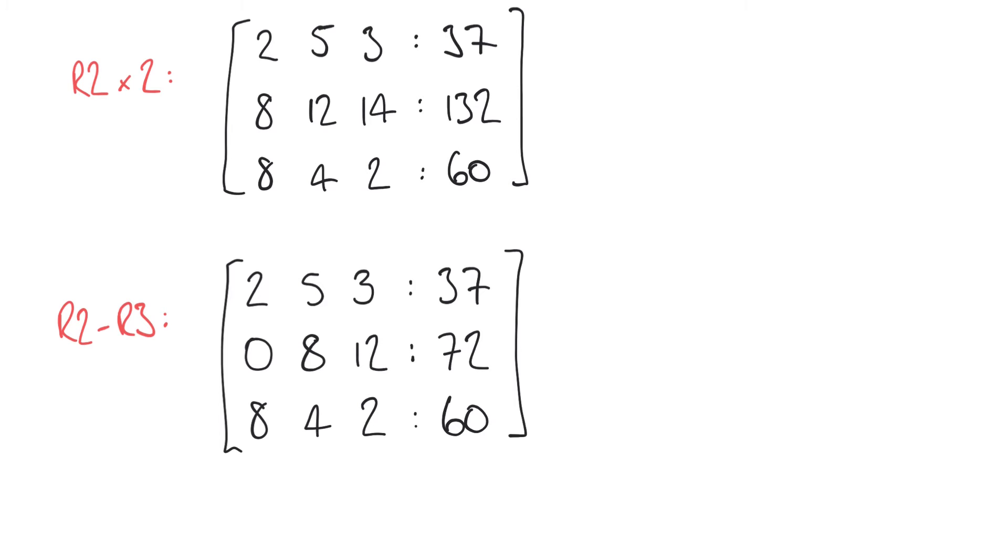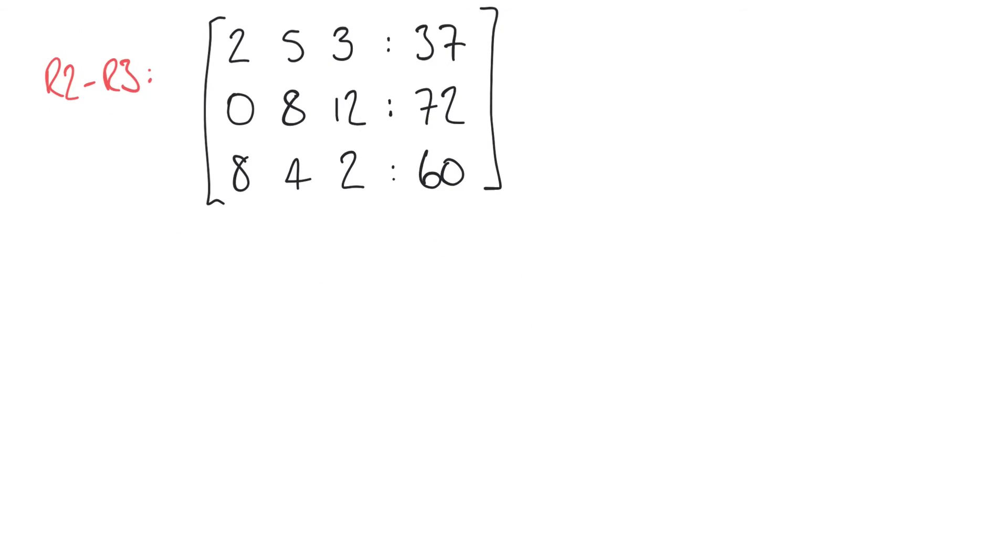So now we've got a 0 here which is good. Let's see what more we can do. Let's take the first row and multiply the first row by 4. So now we have rather than 2, 5, 3 and 37 we have 8, 20, 12 and 148.